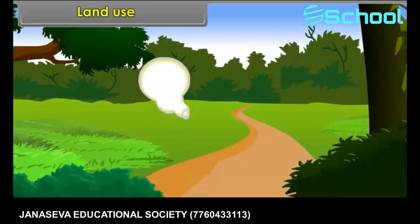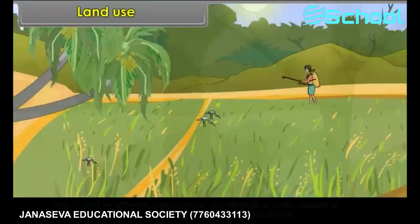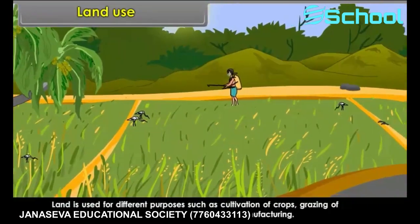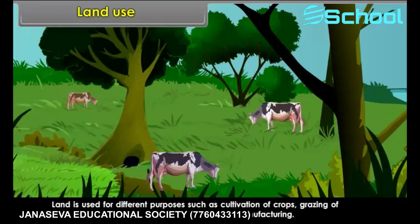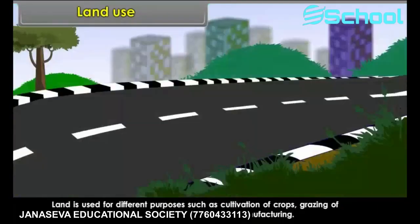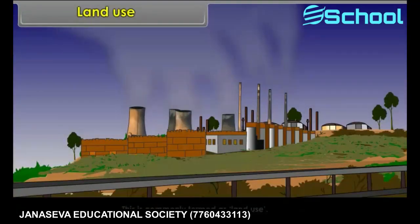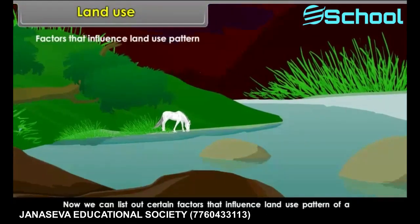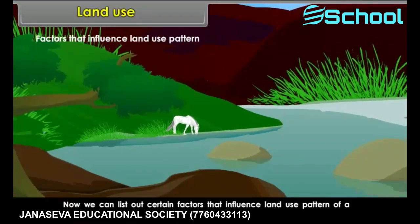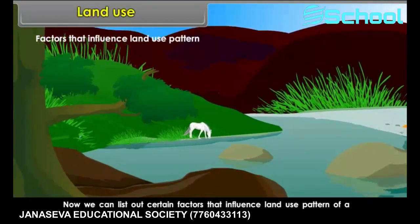Land use. What are the different purposes for which land is used? Land is used for different purposes such as cultivation of crops, grazing of animals, building houses and roads, mining, and manufacturing. This is commonly termed as land use. We can list out certain factors that influence the land use pattern of a country or a region at a given time.